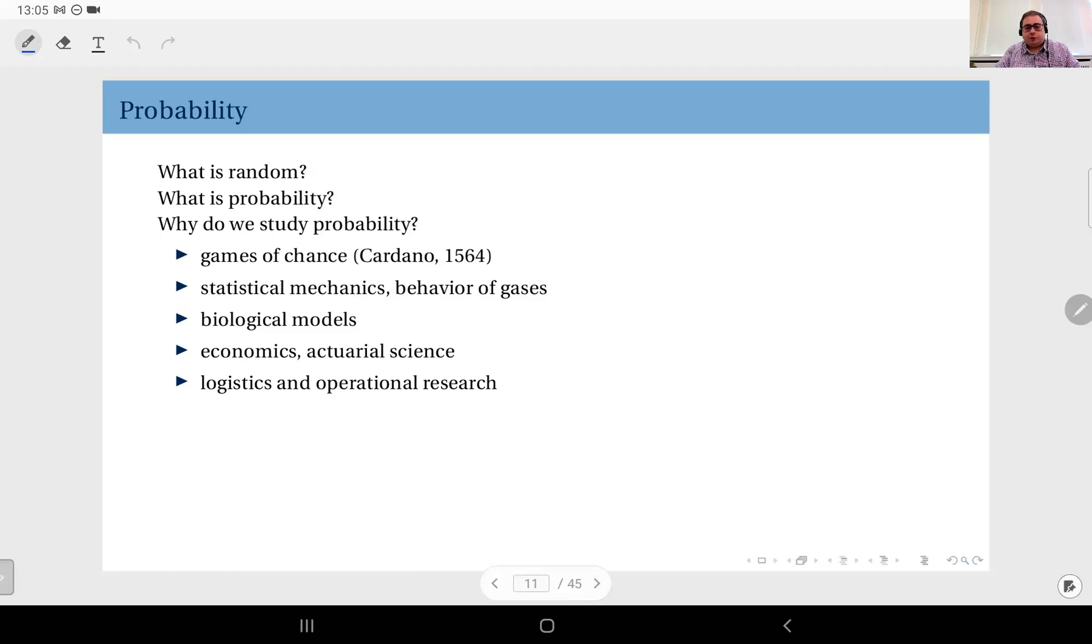Another aspect is obviously logistics and operational research, and almost the entire field of industrial engineering and operational research deals with probabilistic models. It has to do with planning and optimization of certain procedures, and it could be production, it could be delivery, any operation you can think of that has a large scale, an industrial scale, has to do with optimization.